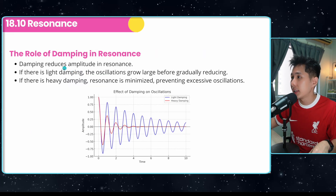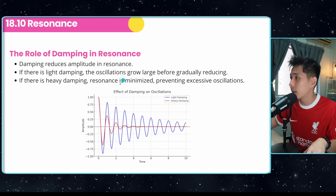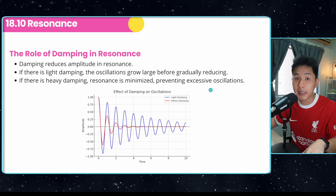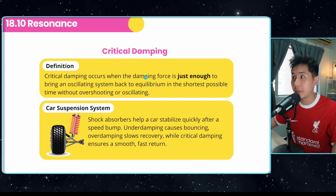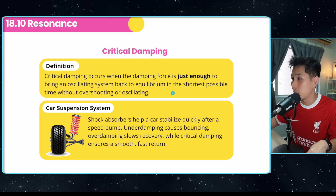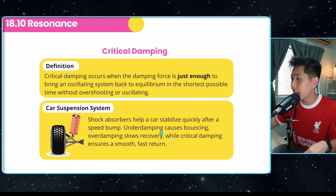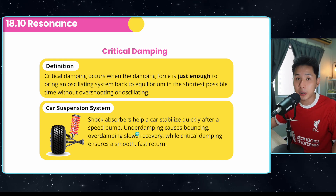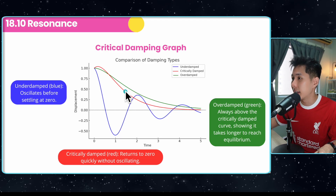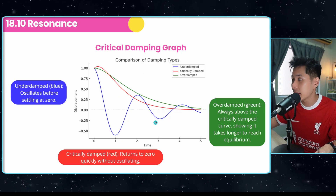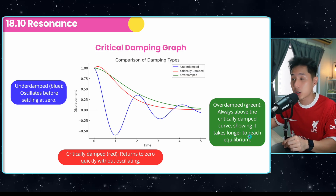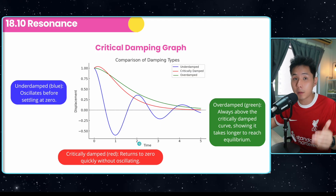Damping reduces amplitude at resonance. With light damping, oscillations grow large before gradually decreasing. With heavy damping, resonance is minimized, preventing excessive oscillations. A key term is critical damping — this is when the damping force is just enough to bring the system back to equilibrium without oscillating. In a car suspension system: underdamping causes bouncing; overdamping slows recovery; and critical damping ensures a smooth and fast return to equilibrium.